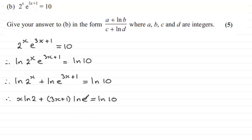Now the natural log of e is 1. Any log in its own base is always 1, so that's 1 there. And so cleaning this up, we've got x times the natural log of 2 plus just simply 3x plus 1 equals the natural log of 10.